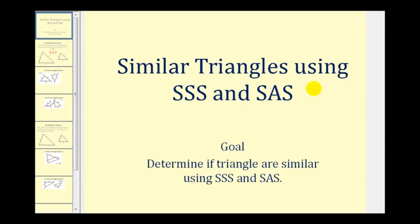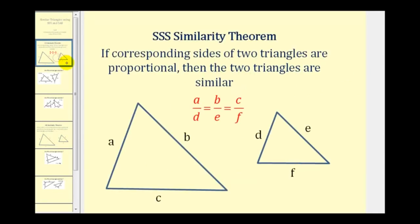Welcome to a lesson on similar triangles using side-side-side and side-angle-side similarity. The side-side-side similarity theorem states that if corresponding sides of two triangles are proportional, then the two triangles are similar. So if the ratio of a to d equals the ratio of b to e, which equals the ratio of c to f, then we have two similar triangles.